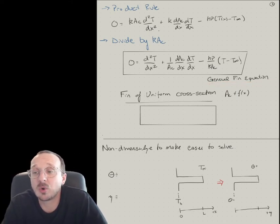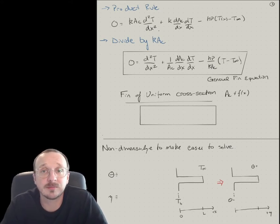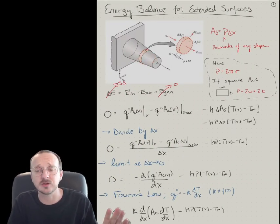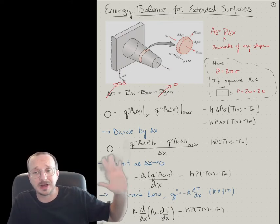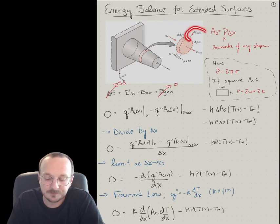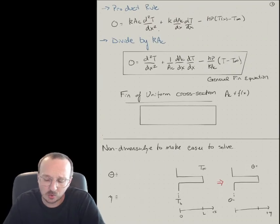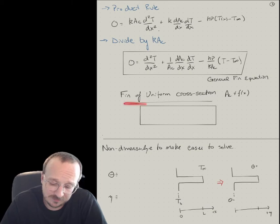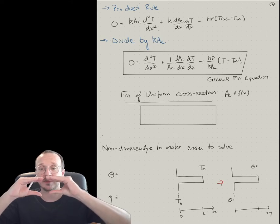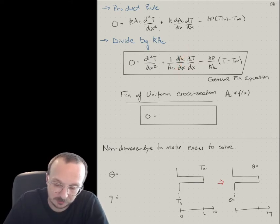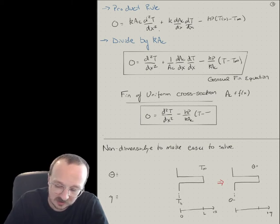We start with the simple energy balance of a control volume. The key difference from a solid wall or pipe is that we include convective losses along the length of the fin — you have to include this extra convective term. A very common simplification is fins of uniform cross-section: if Ac is not a function of x, then dAc/dx equals zero and that term drops out, giving the simpler equation: d²T/dx² minus (h·p)/(k·Ac)·(T minus T-infinity) = 0.